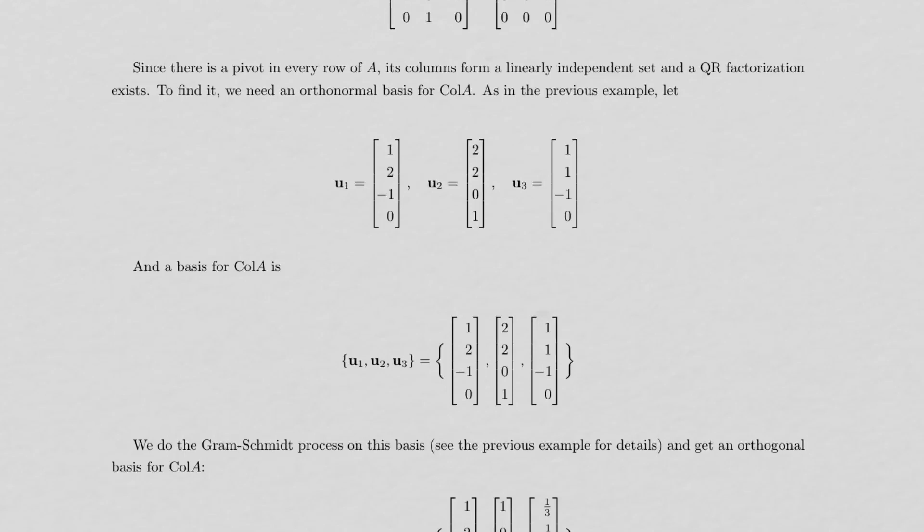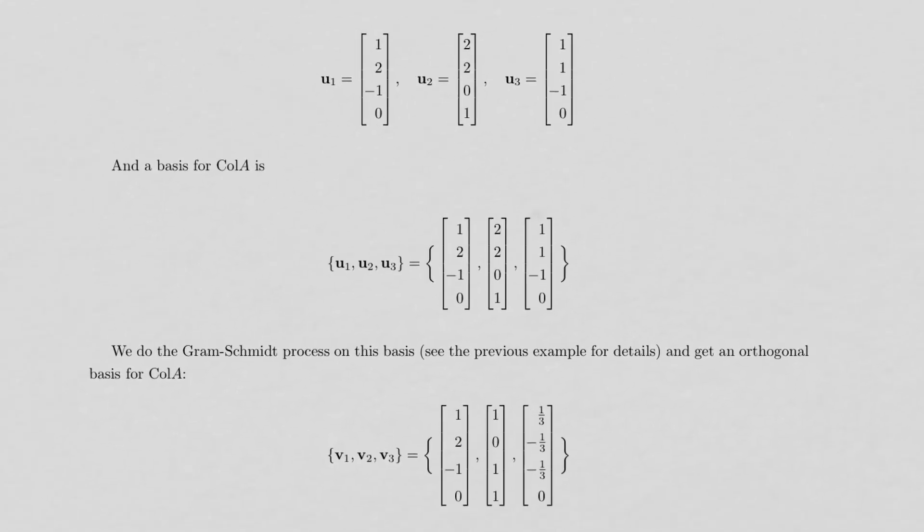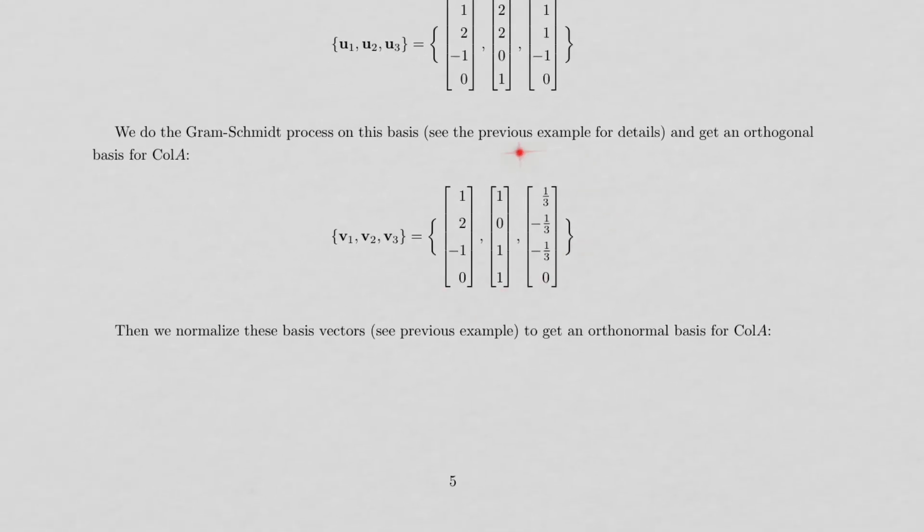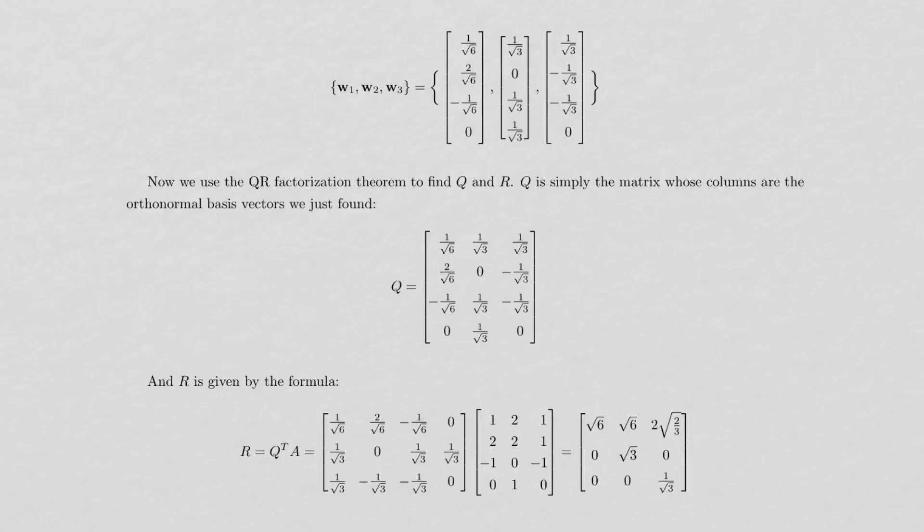what I need is an orthonormal basis for the column space of A. Well, we just did that. So here's my orthogonal basis. Just look at the previous example and you can see the steps there. And then here's the orthonormal basis that we just got. So now all we need to do is use the QR factorization theorem to find Q and R.